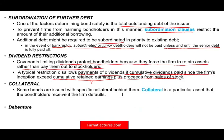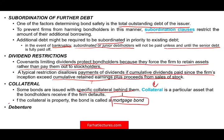Bondholders might also request collateral. Some bonds are issued with specific collateral — for example, a building, warehouse, or inventory pledged against the bond. If the issuer cannot pay, those assets can be sold. These are called mortgage bonds or collateral bonds. In contrast, debentures are not backed by any specific collateral, meaning bondholders have no asset protection if something goes wrong.